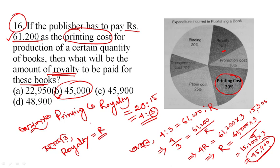Printing cost is 20%. We have royalty. Printing cost and royalty have the same relationship. The percentage combined is 40.